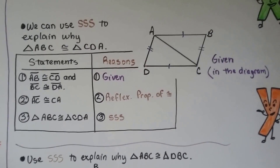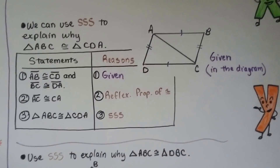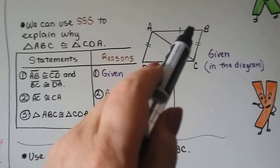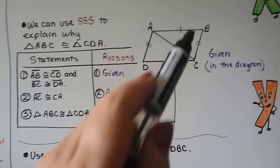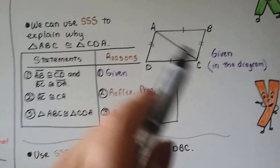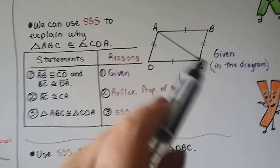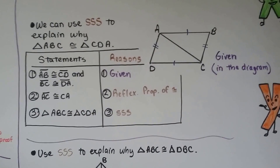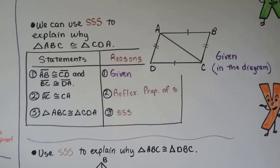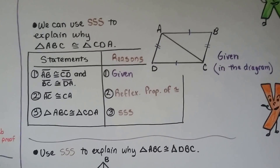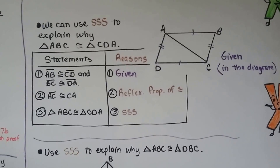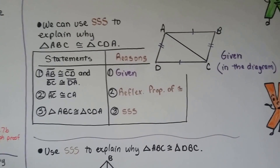Step 2 says AC is congruent to CA. It's saying the AC segment used for this triangle is congruent to the same segment used for this triangle. That's the reflexive property of congruence.